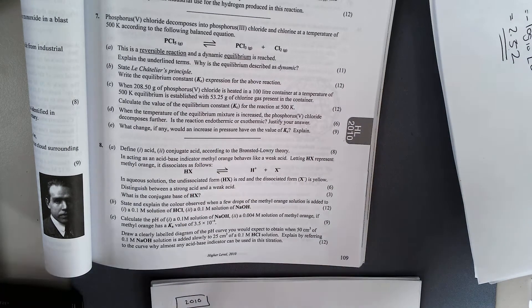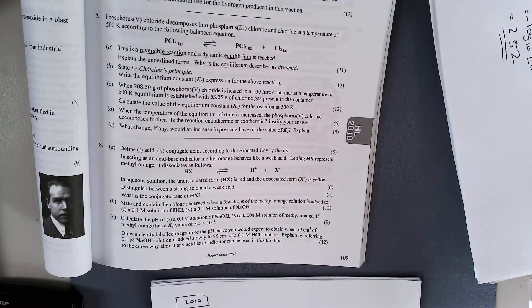2010 question 8: define an acid according to Bronsted and Lowry. A proton donor.